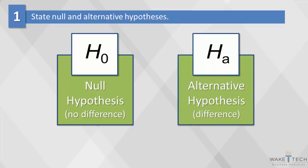The alternative hypothesis, or HA, is the opposite of the null hypothesis. It provides a statement of difference. In our study, we will seek evidence against the claim of H0 as a way of proving HA.